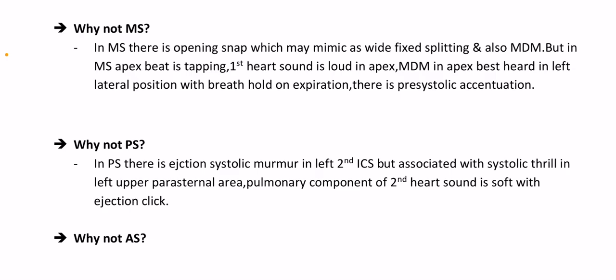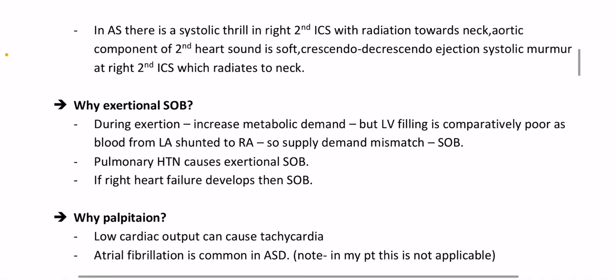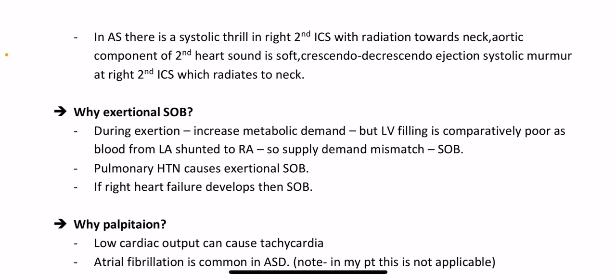Why not pulmonary stenosis? In PS, there is an ejection systolic murmur in the left 2nd intercostal space but associated with a systolic thrill in the left upper parasternal area; the pulmonary component of the second heart sound is soft with an ejection click. Why not aortic stenosis? In AS, there is a systolic thrill in the right 2nd ICS with radiation to the neck; the aortic component of S2 is soft; crescendo-decrescendo ESM at the right 2nd ICS radiates to the neck.